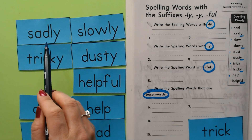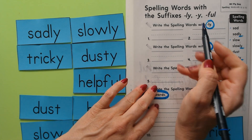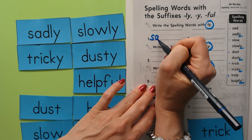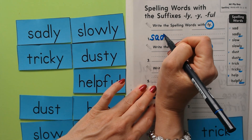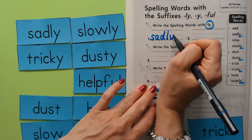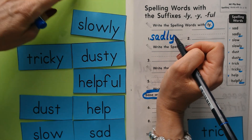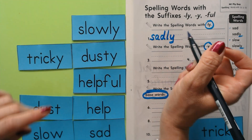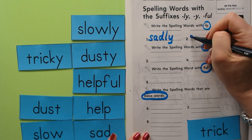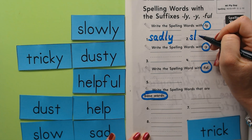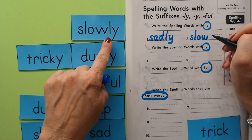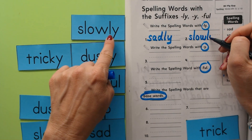Now let's go ahead and write sadly and slowly — the ones that end with the -ly suffix. Sad is our base word, then add -ly. Slowly: slow is our base word and then we have -ly as our suffix. Slowly — done.